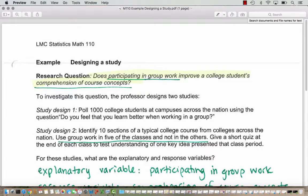In this example we look at designing a study. The research question we're investigating is: does participating in group work improve a college student's comprehension of course concepts? You can see I started to annotate this research question, underlining what I think is the explanatory variable and the response variable.